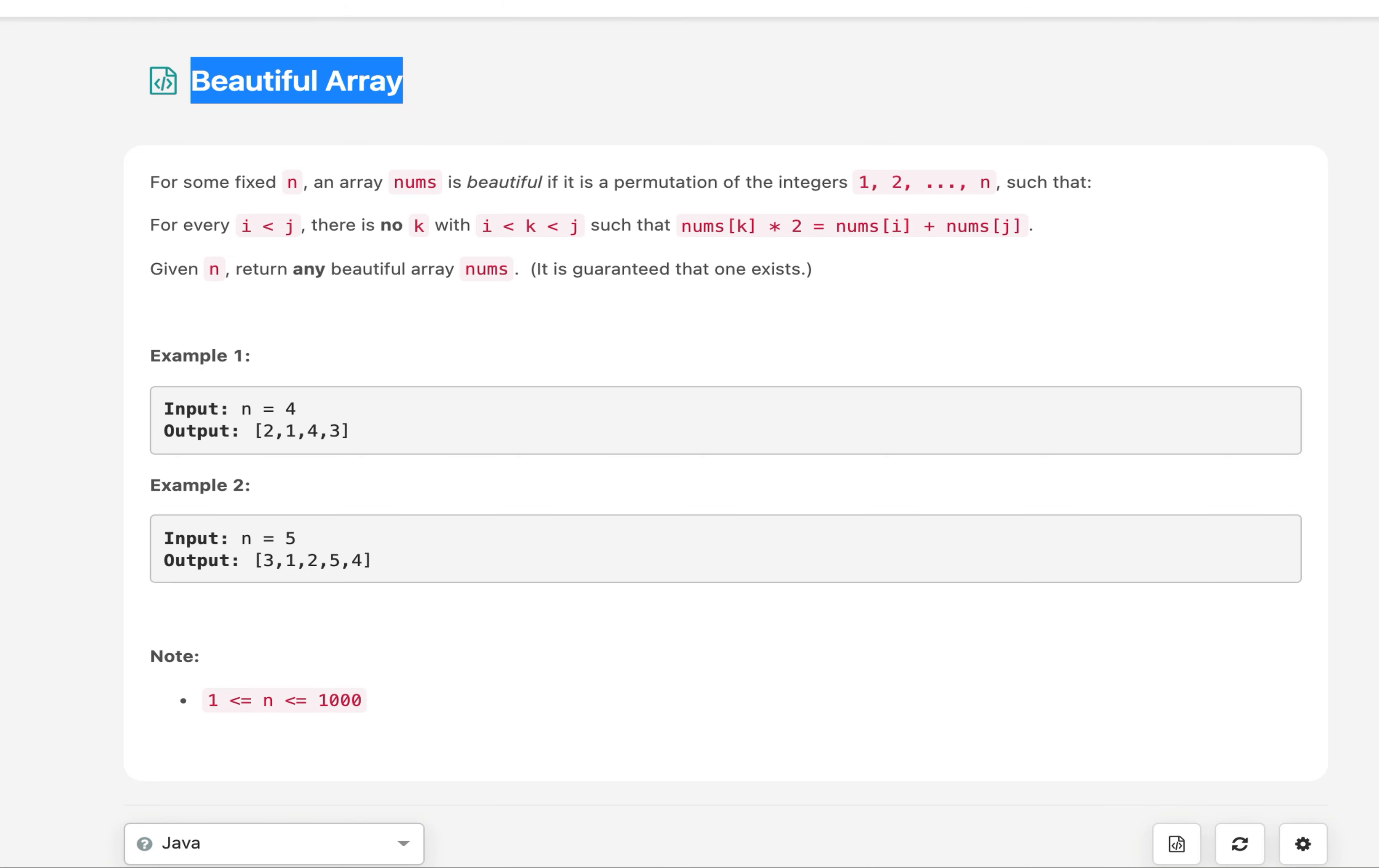In this question we are given an array of integers where elements start from 1 up till n. We need to permutate this input array in such a way that for every i,j there is no value of k where nums[k] * 2 equals nums[i] plus nums[j].